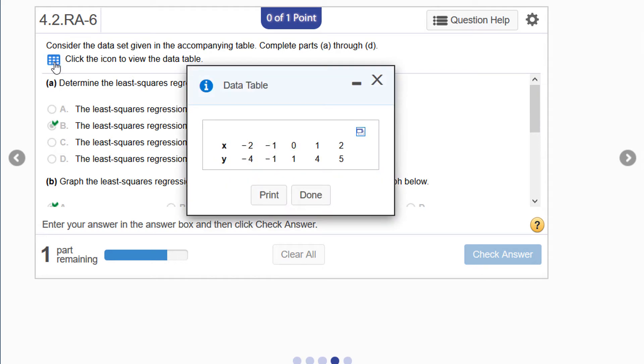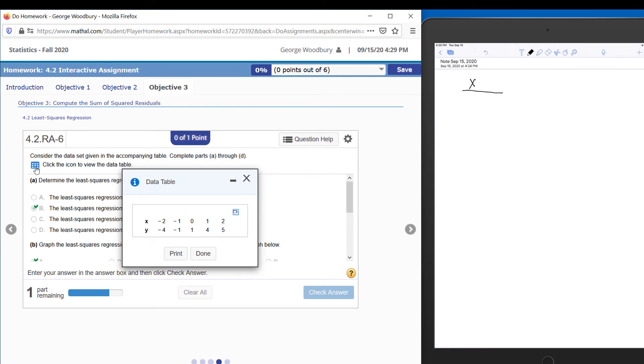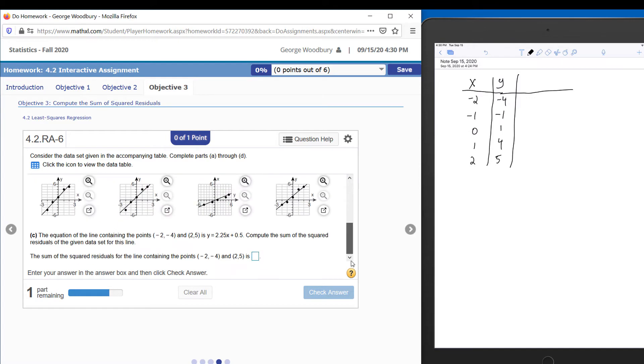I'm going to click to open the table and record it on my iPad. The x values were negative two, negative one, zero, one, and two. The y values were negative four, negative one, one, four, and five. The prediction using the equation that we were given—the equation was y equals 2.25x plus 0.5—so this is the predicted value of y.